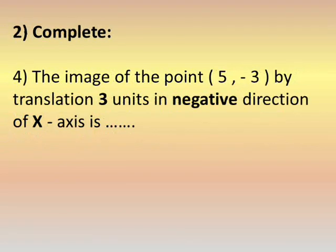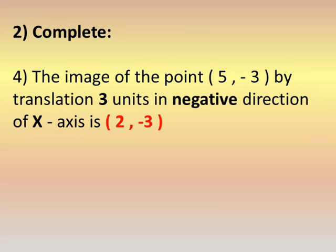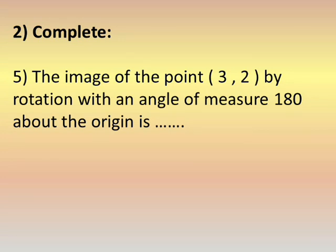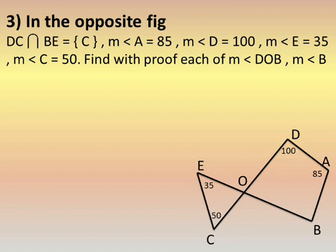Number four: the image of the point (5, negative 3) by translation 3 units in the negative direction of the x-axis means negative 3 is added to x. So 5 plus negative 3 gives 2; y stays as negative 3. The image is (2, negative 3). Number five: the image of the point (3, 2) by rotation of 180 degrees about the origin — rotation by 180 changes both signs, so x becomes negative 3 and y becomes negative 2.